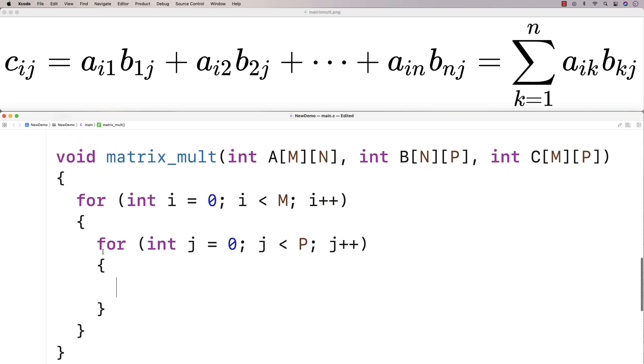So the first thing we've got is a loop that's going to go over all of the column indexes of C. And that is going to be done for all of the row indexes of C with this outer loop.